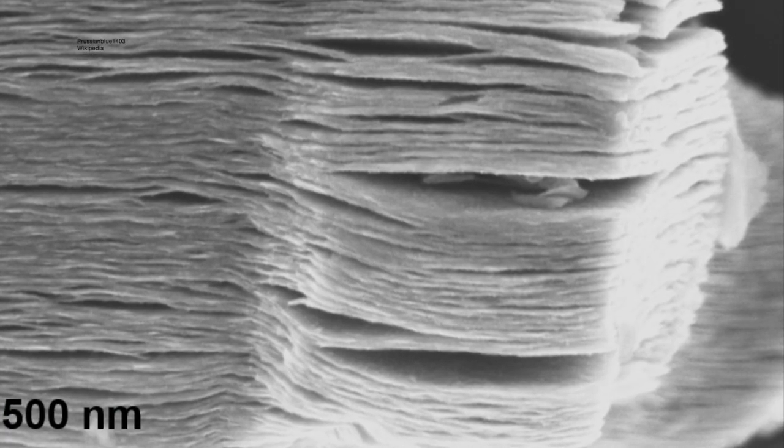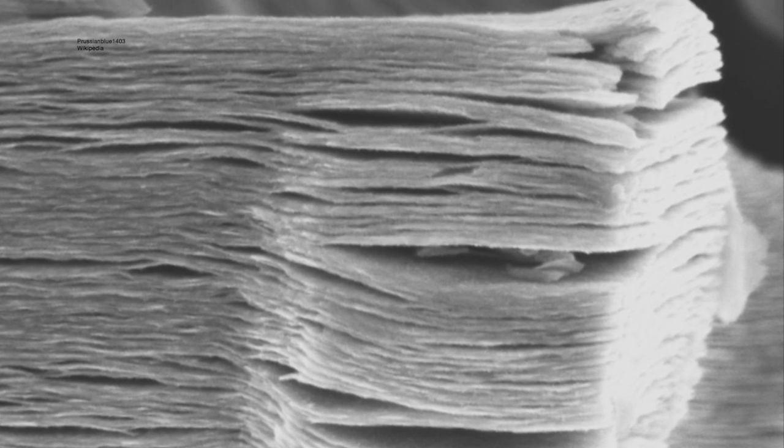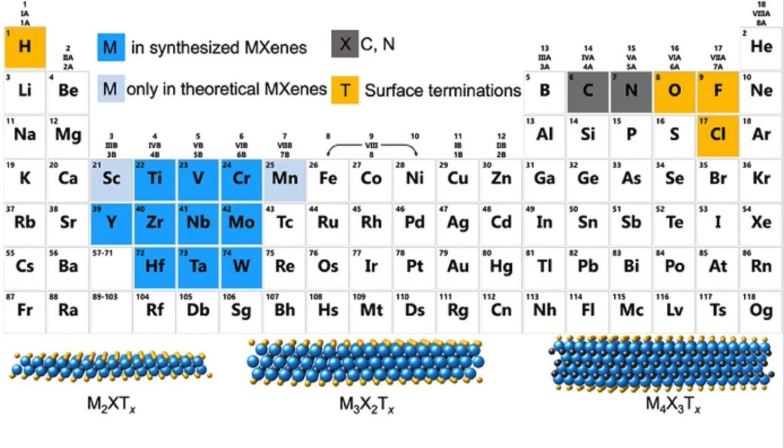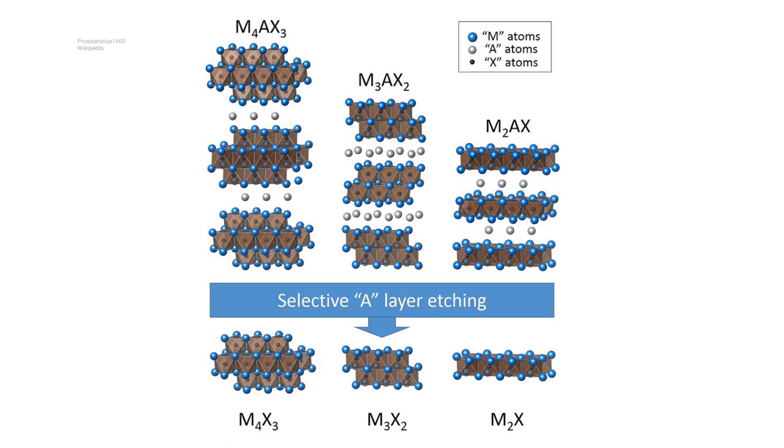At the core of this technology is a thin sheet of a nanomaterial called MXene. MXene is a class of materials discovered by Drexel researchers in 2011, made up of a few atomic layers of transition metal carbides and nitrides created by etching another class of ceramic materials called MAX phase.